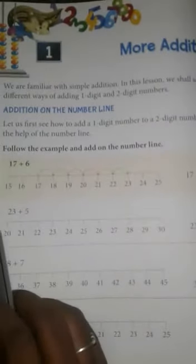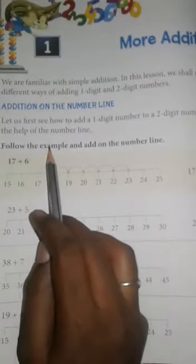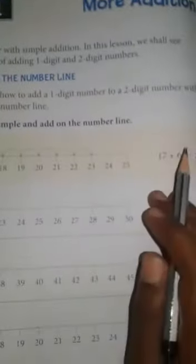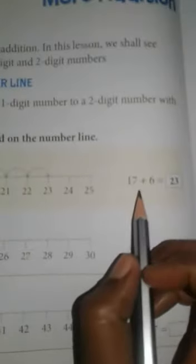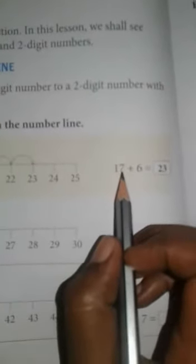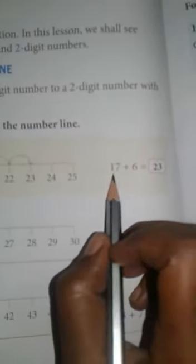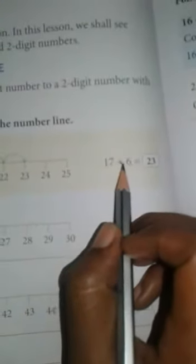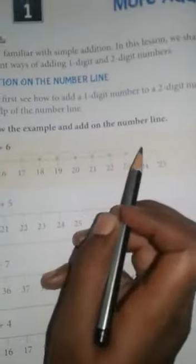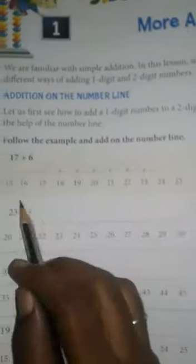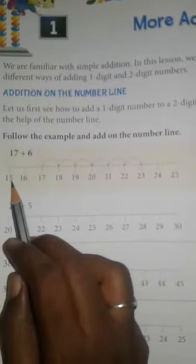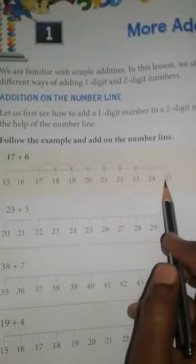Here is some exercise. Follow the example and add on the number line. So students, in this concept, we are going to learn adding two digits and one digit together, adding two digit and one digit on this number line. In this number line, numbers start from 15 and end at 25.